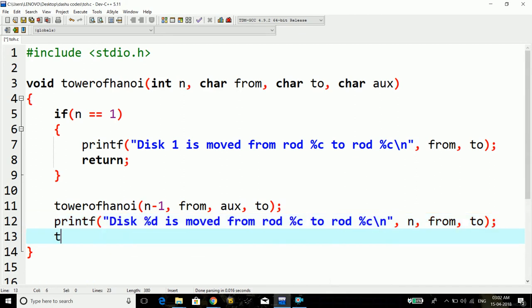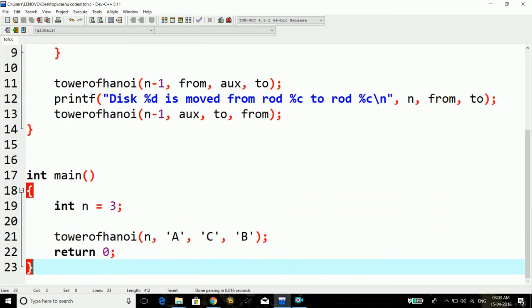And lastly, I'll make the last recursion call: tower of Hanoi with n minus 1, aux, to, and from. And this is done. Let's just run this program.